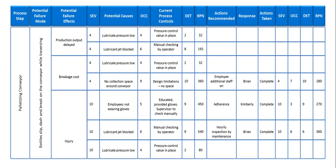The RPN is simply the product of severity, occurrence, and detection, and you get the values as mentioned earlier. Whenever the RPN is higher, you try to take an action. Then there follows the residual risk — after you have taken the action, what is the residual risk in the process? Re-evaluate the values of severity, occurrence, and detection, and that goes into the revised RPN.